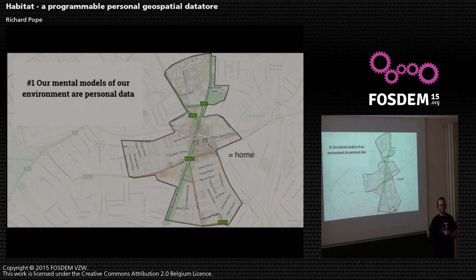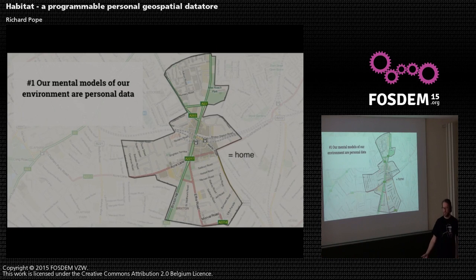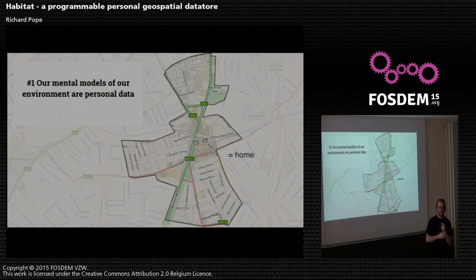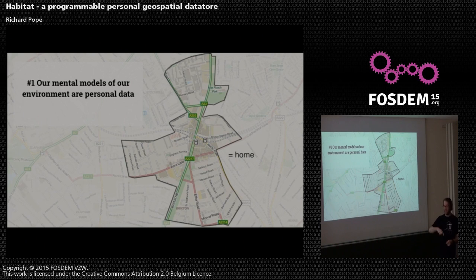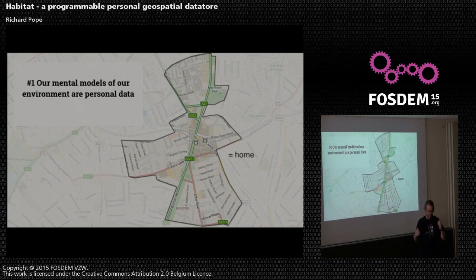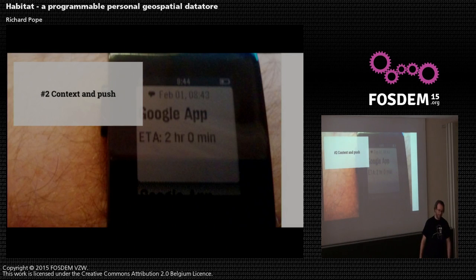There are five itches I was trying to scratch with building this proof of concept. The first is that what we think of as personal data is changing to include fairly abstract things — like the picture we have in our heads when we think of our neighbourhood. This is basically what Google Now is building in the background, so it knows to tell you when you're home. It's actually very abstract — like 'about 15 minutes from my place, but there are some bits I don't go to very often.'